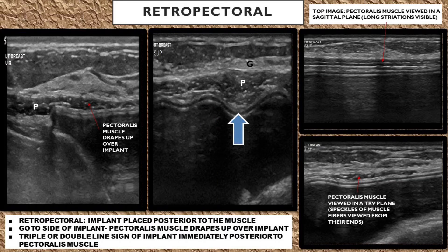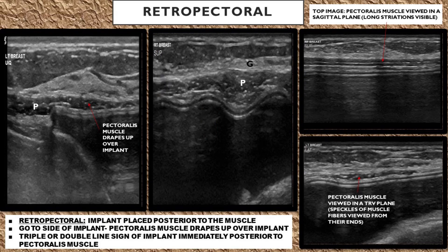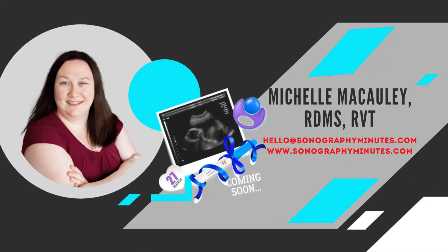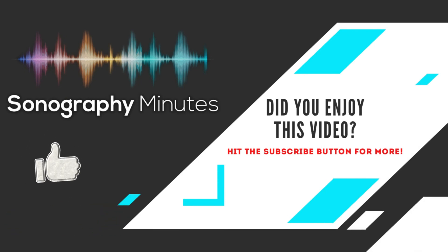With a retropectoral implant placement, it's a lot easier to visualize the fibrous capsule against the more hypoechoic striated pectoralis muscle. To visualize a retropectoral placement, go to the side of the implant and the pectoralis muscle is going to drape up over the implant. Then you'll notice your triple or double line sign of the implant immediately posterior to the pectoralis muscle in the anterior portion of the implant.